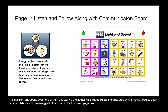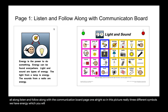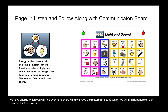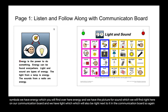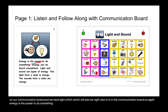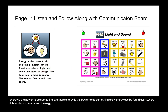Page one. In this picture we have three different symbols. We have energy, which you will find over here. We have the picture for sound, which we will find right here on our communication board. And we have light, which will also be right next to it. Energy is the power to do something. Energy can be found everywhere. Light and sound are types of energy.